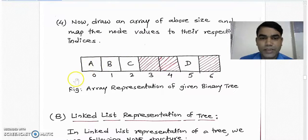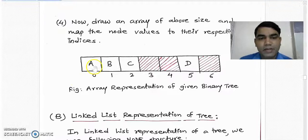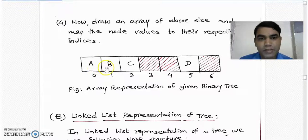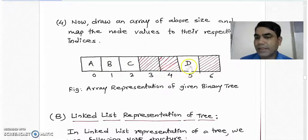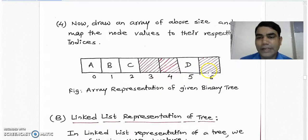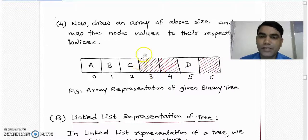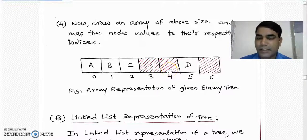So if you see in this step number 4, A will be placed at index 0, B is placed at index 1, C is placed at index 2, D is placed at index 5. Indices 3, 4 and 6 locations are empty which are represented by the shaded area here. It means these memory blocks get wasted in the array representation. This is the drawback of array representation.